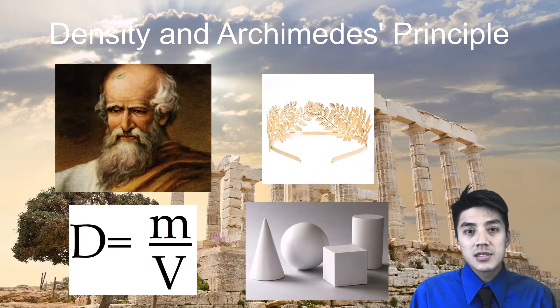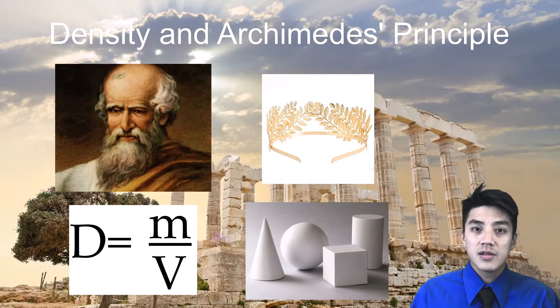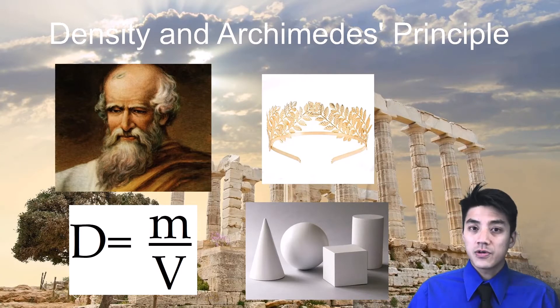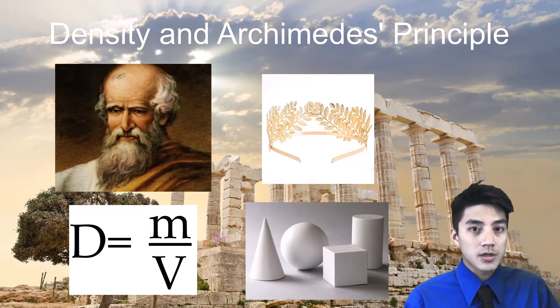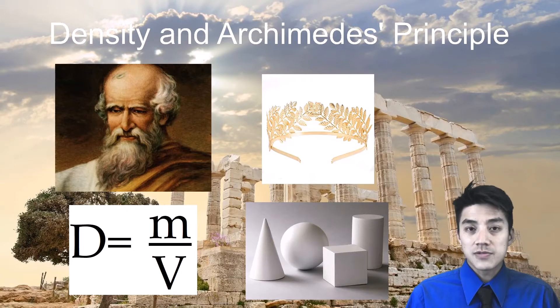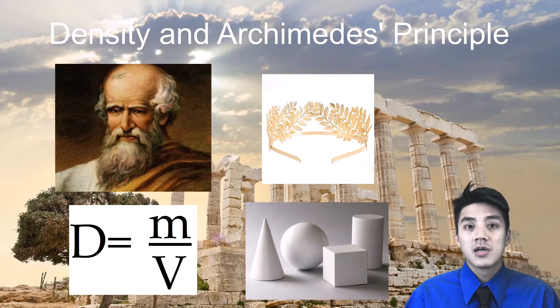Finding the mass is easy, he can just weigh it, but finding the volume was a bit more difficult because the crown had a weird irregular shape. Unlike a sphere or a cube, which has perfect edges which you can measure, the crown has a very odd shape, and that made it really difficult for Archimedes.